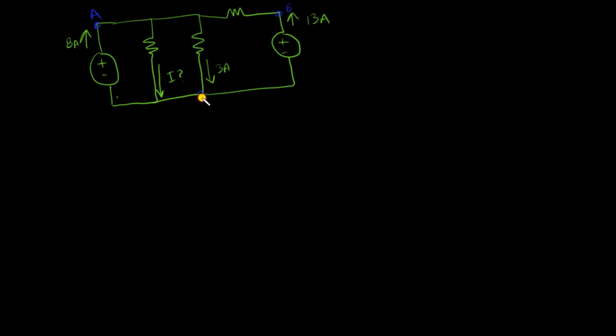This is a node and this entire portion is a node. I can see node A has a lot of current entering and leaving, so I'll consider node A and apply KCL at A.